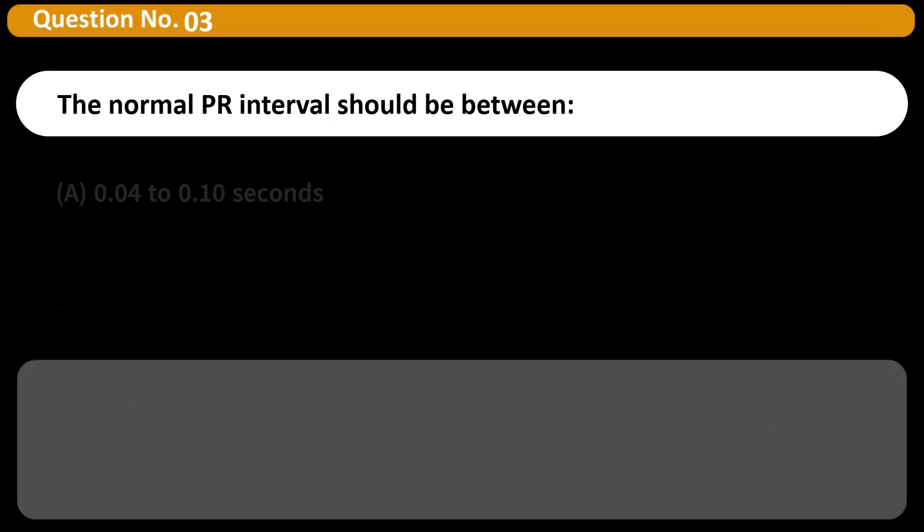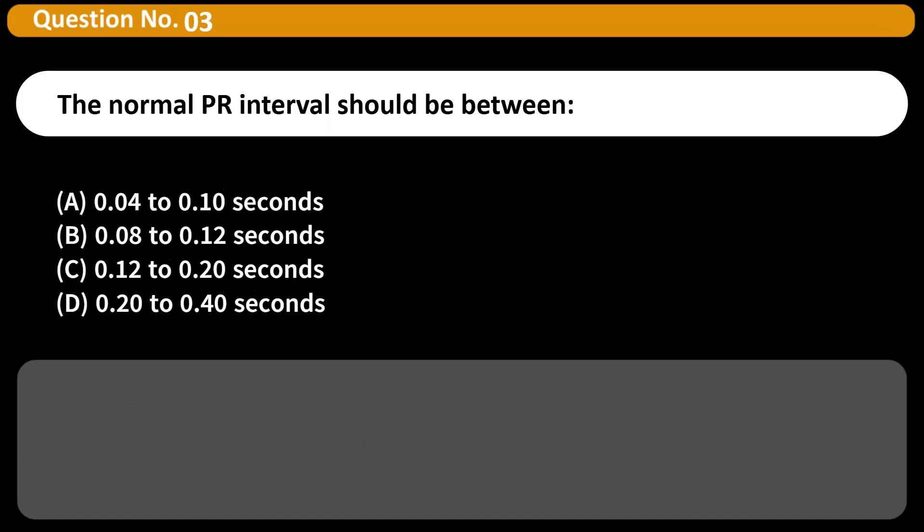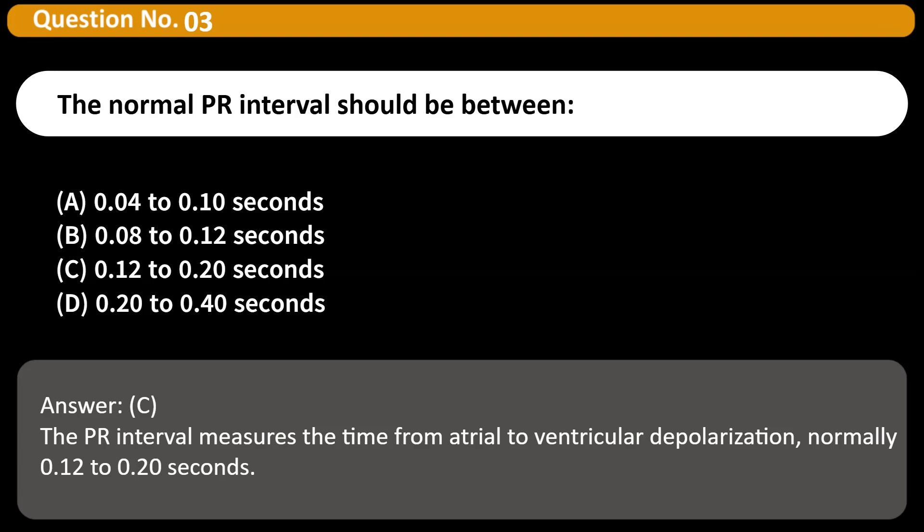The normal PR interval should be between A. 0.04 to 0.10 seconds B. 0.08 to 0.12 seconds C. 0.12 to 0.20 seconds D. 0.20 to 0.40 seconds Answer C. The PR interval measures the time from atrial to ventricular depolarization, normally 0.12 to 0.20 seconds.